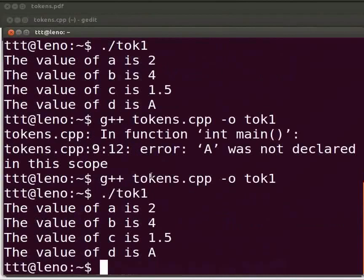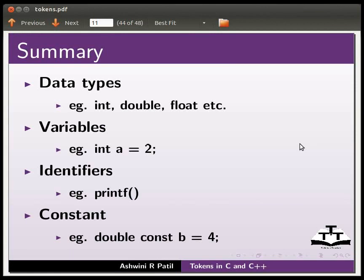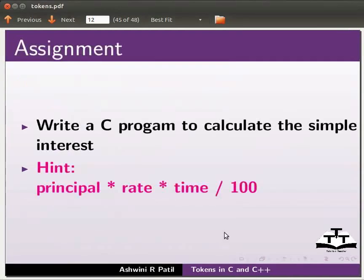Now switching back to the slides for a summary: datatypes covered include int, double, and float. Variables include examples like int a = 2. Identifiers include printf. Constants include double const b = 4. The assignment exercise is to write a simple interest program: SI = principal * rate * time / 100.